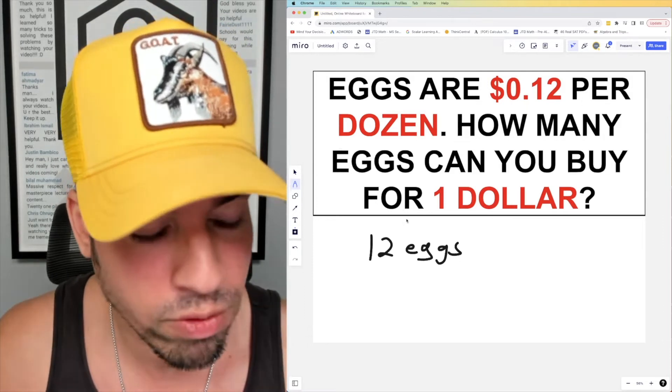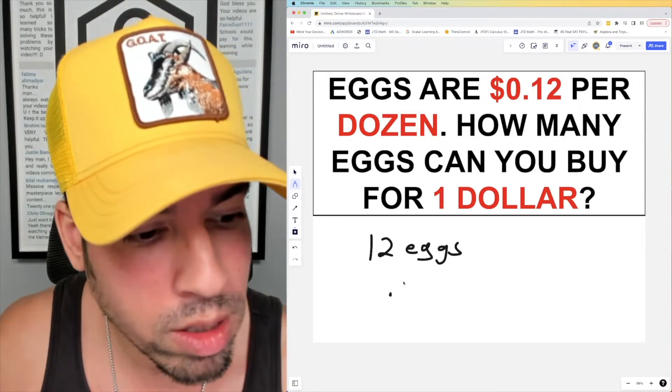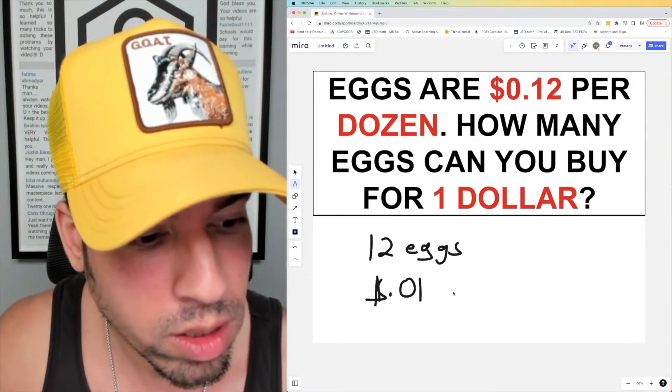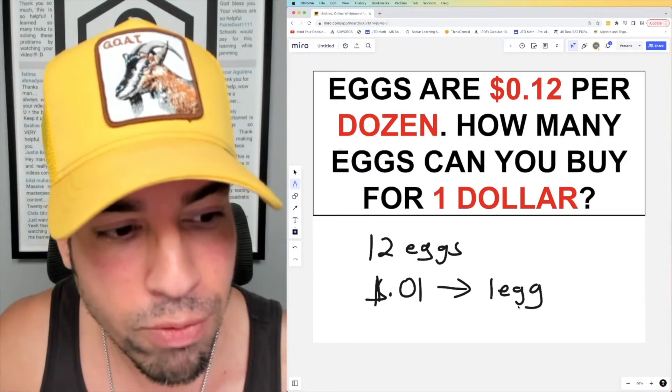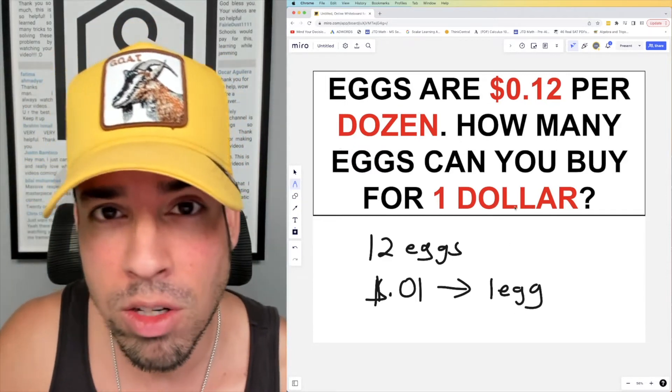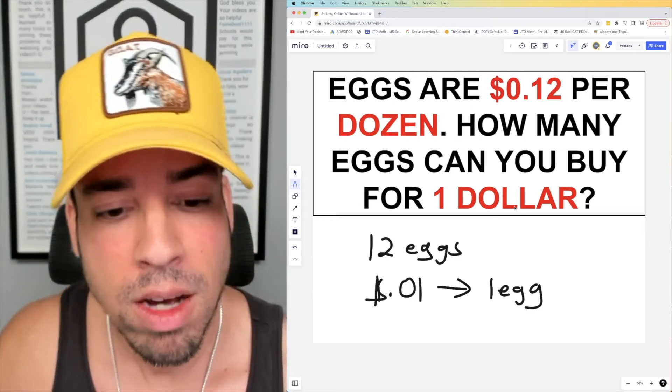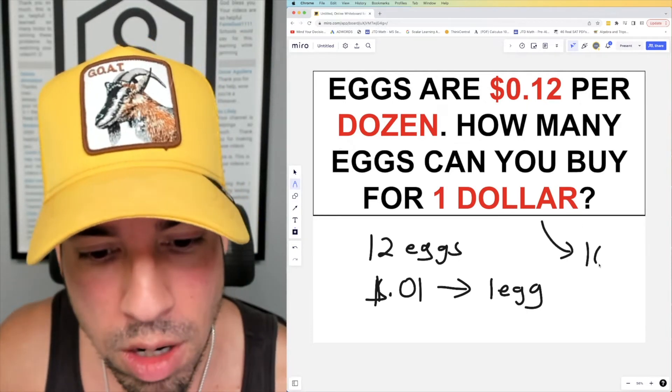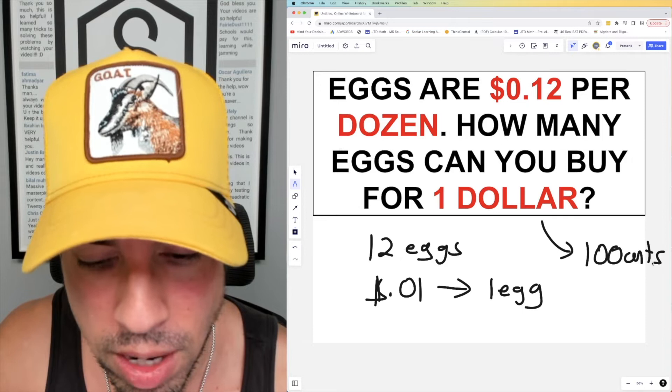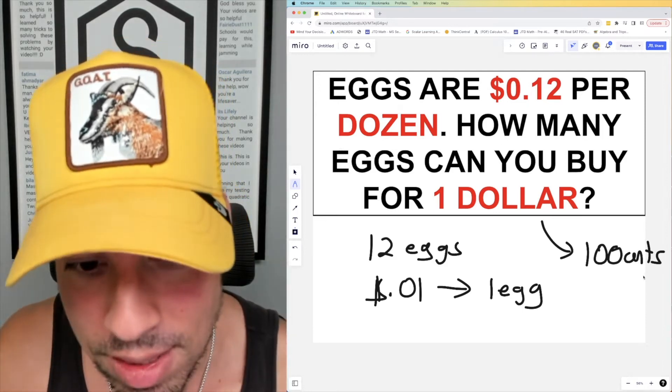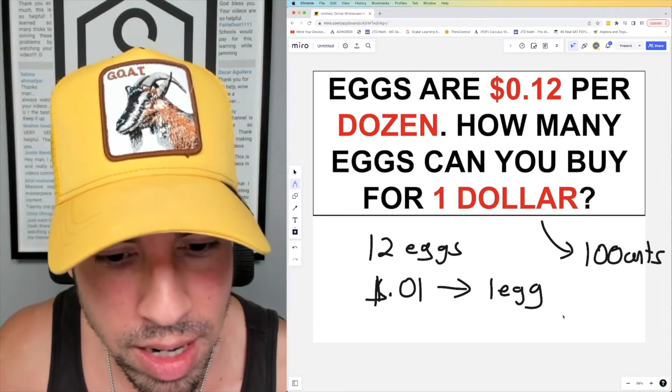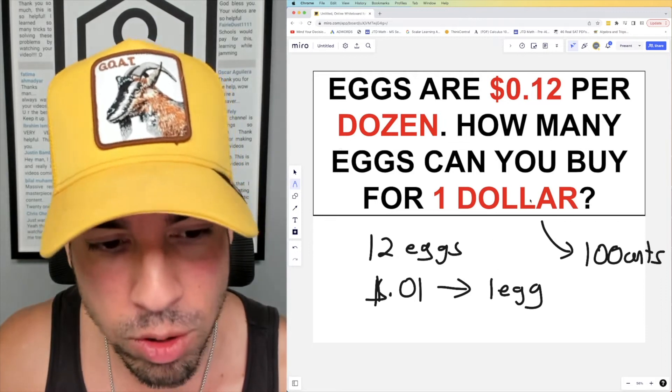12 cents per 12 eggs, so one cent, right? One cent for one egg. Therefore, if we're trying to get a dollar, a dollar is how many cents? A dollar is 100 cents. Okay, so if we got 100 cents and we need one cent to buy an egg, to get a dollar, for using a dollar, we can get 100 eggs. Boom!